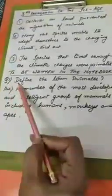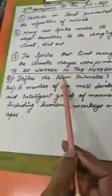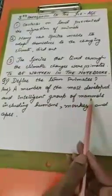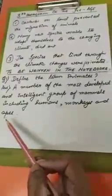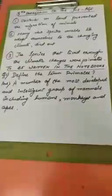To be written in the notebook — Question 1: Define the term primates. Answer: A member of the most developed and intelligent group of mammals, including humans, monkeys, and apes, is known as a primate.